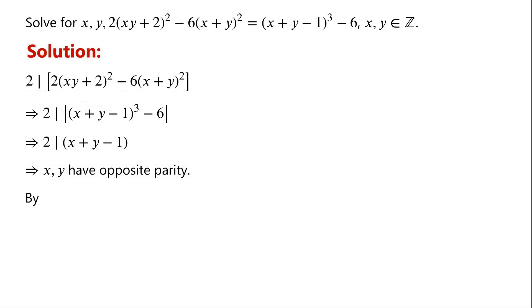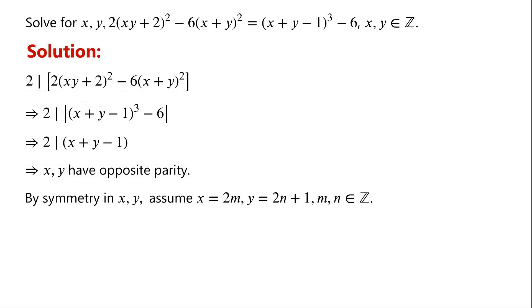By symmetry in x and y, we assume that x equals 2m and y equals 2n plus 1, where m and n are integers. Then the original equation becomes: